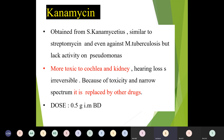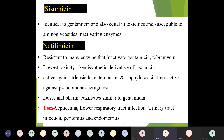The next two drugs are sisomycin and netilmicin. Sisomycin is very similar to gentamicin in characteristics, toxicity, and susceptibility to aminoglycoside-inactivating enzymes. Netilmicin is resistant to many enzymes that inactivate gentamicin and tobramycin. It has the lowest toxicity, is a semi-synthetic derivative of sisomycin, and is active against Klebsiella, Enterobacter, and Staphylococcus, but less active against Pseudomonas aeruginosa. Doses and pharmacokinetics are similar to gentamicin. Uses include septicemia, lower respiratory tract infection, urinary tract infection, peritonitis, and endometritis.